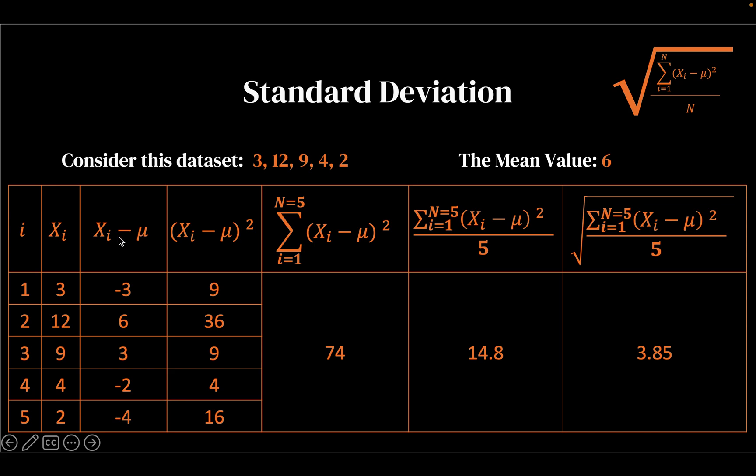And then we subtract the mean from each value, which would then be three minus six would be minus three, 12 minus six would be six, nine minus six would be three, and then we could have this column where we have got the difference from the mean with us. And then we could square these values to obtain a squared difference.